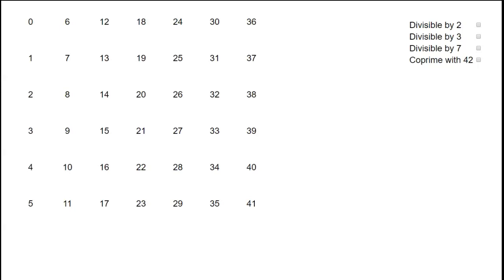Here's another example with the inclusion-exclusion principle. We want to find how many numbers there are in the range 0 up to 41 that are co-prime with 42. So 42 is 2 times 3 times 7, so a number is going to be co-prime with 42 if it's not divisible by 2, not divisible by 3, and not divisible by 7.